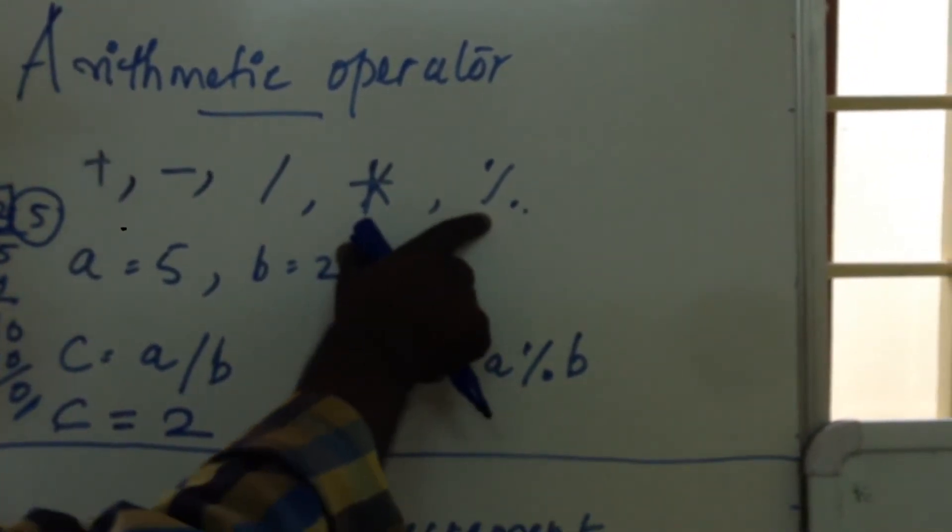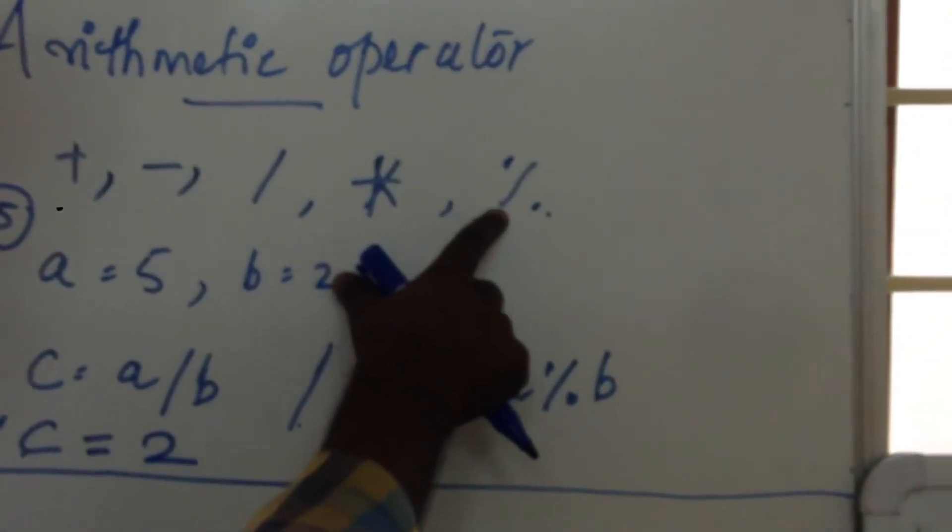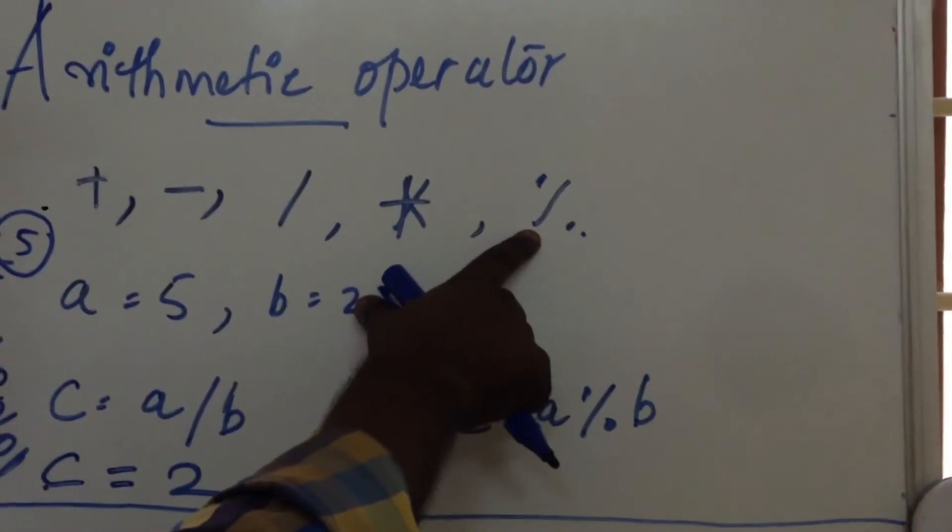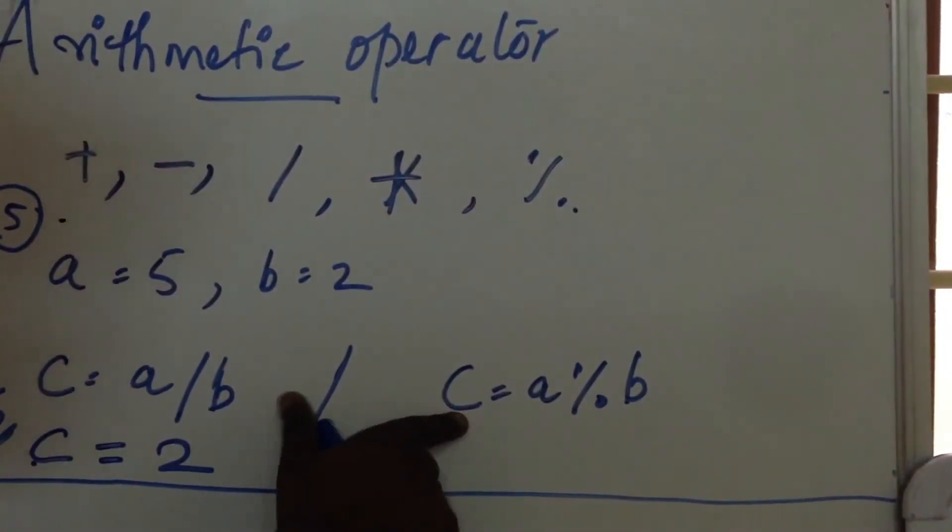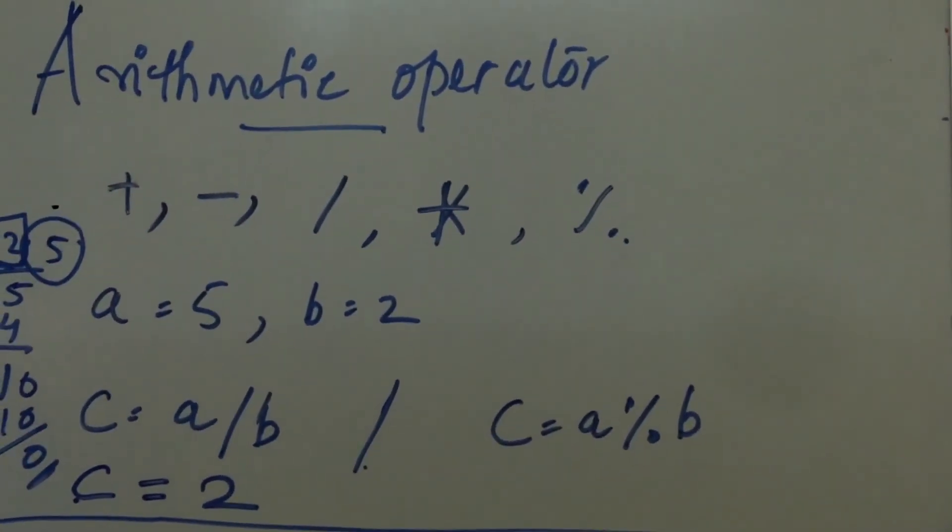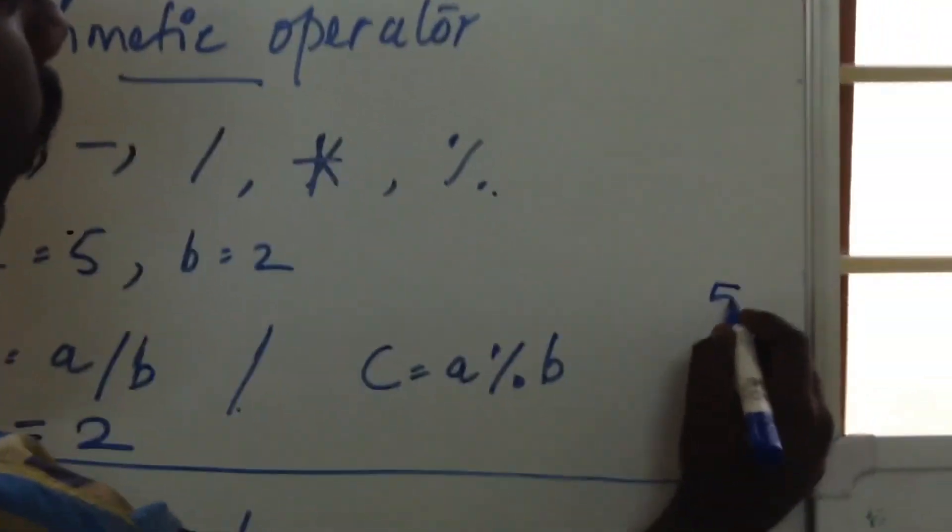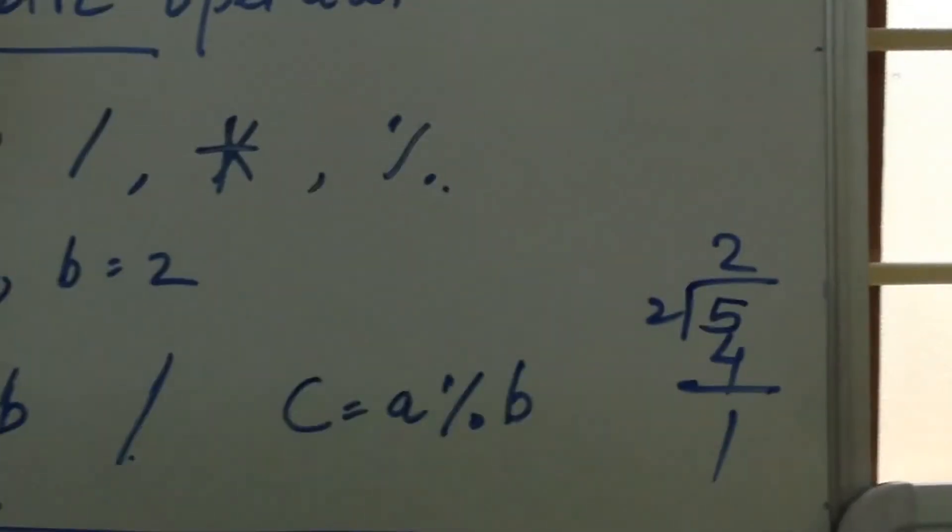But this operator is called a modular operator. This operator is used to get the remainder. Then c equals a modular b. 5 modular 2, 2 into 5, remainder 1.